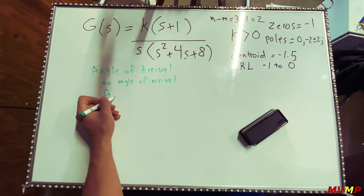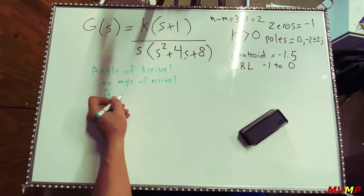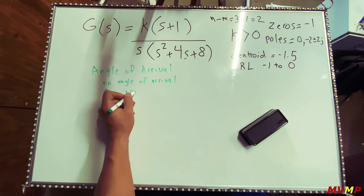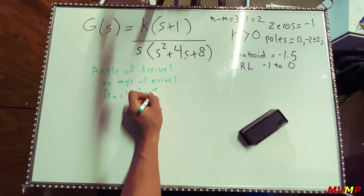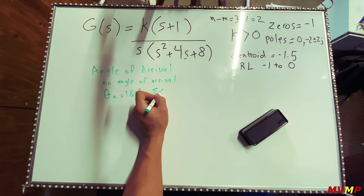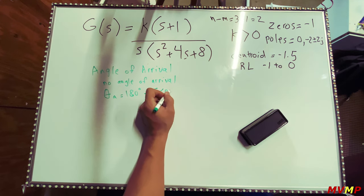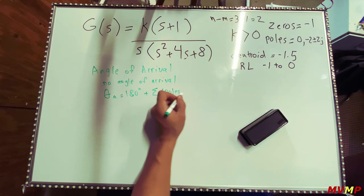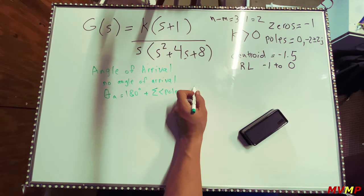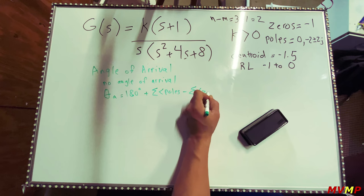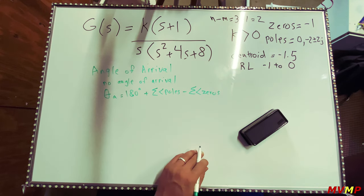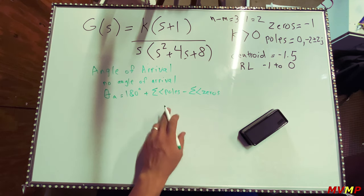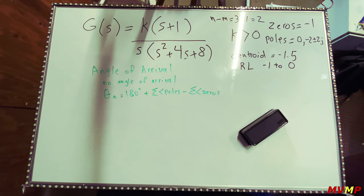If there were complex zeros, the formula for angle of arrival is 180 degrees plus the sum of the angles of the poles minus the sum of the angles of the zeros. But in this case we do not have an angle of arrival.